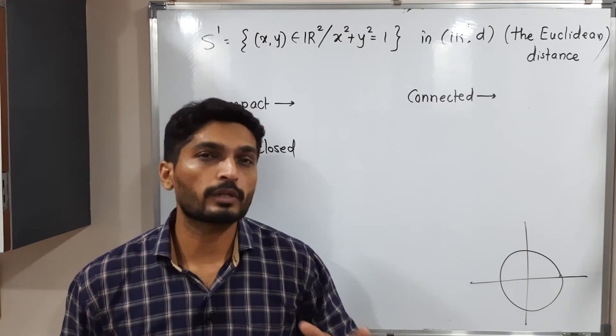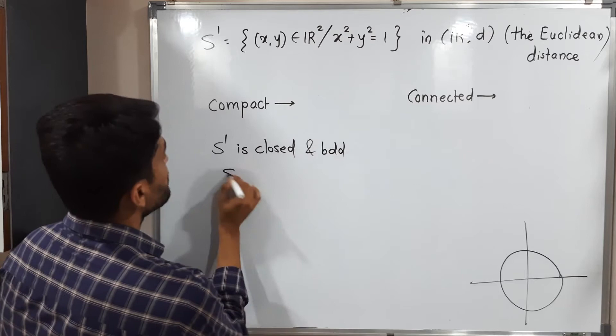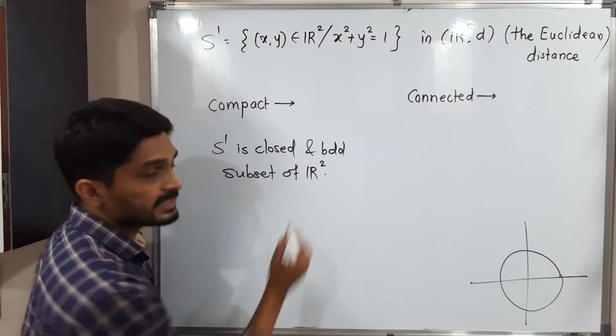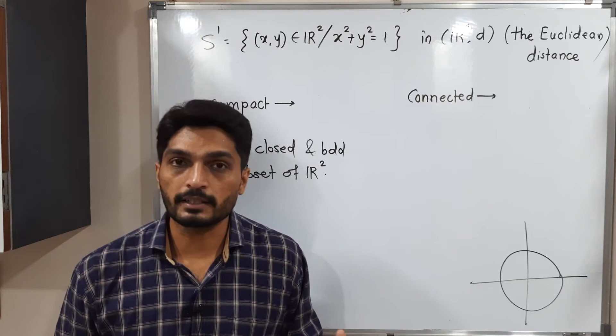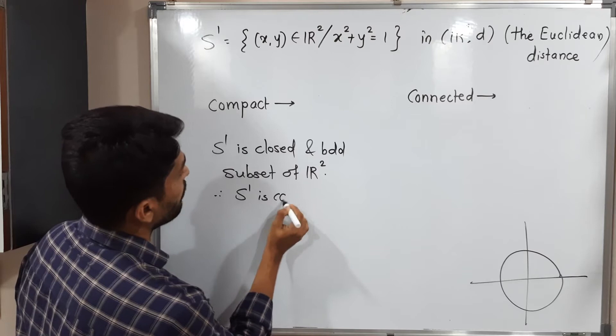So that's why it is bounded. It is closed and bounded subset of R2, obviously with Euclidean distance. That's why if it is closed and bounded both, then we can easily declare it is compact. So therefore S1 is compact.